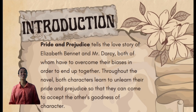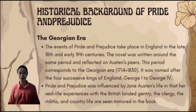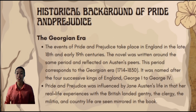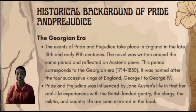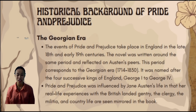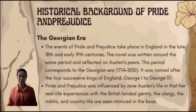Let's start discussing the historical background of Pride and Prejudice. The events take place in England in the late 18th century and early 19th centuries. The novel was written around the same period and reflected Austen's experiences. This period corresponds to the Georgian era, from 1714 to 1830, named after four successive kings of England — George I to George IV. Pride and Prejudice was influenced by Austen's real-life experiences with the British landed gentry, the clergy, the militia, and country life, which are seen mirrored in the book.